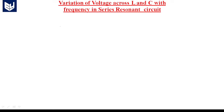Hi guys, today we are going to learn about variation of voltage across inductor and capacitor with frequency in a series resonant circuit. Resonance will occur whenever XL is equal to XC. Let us consider a series RLC circuit.